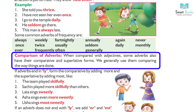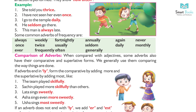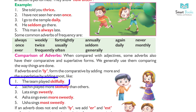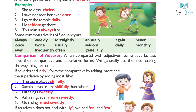Comparison of adverbs. Like adjectives, some adverbs also have comparative and superlative forms. We generally use them when comparing the way things are done. If adverbs end in -ly, we form the comparative by adding 'more' and the superlative by adding 'most.' Examples: 1. The team played skillfully. 2. Sachin played more skillfully than others.